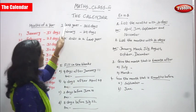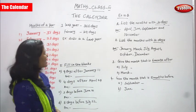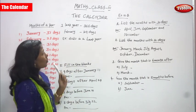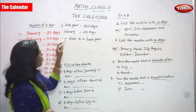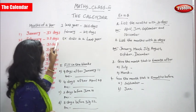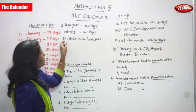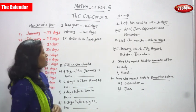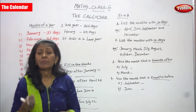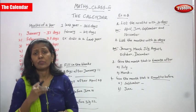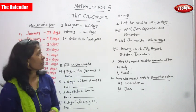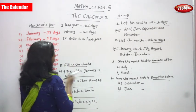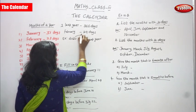A leap year is equal to 366 days. In a leap year, February has 29 days. Generally, one year is equal to 365 days, so February has 28 days. If February has 29 days, we consider that year a leap year. For example, 2020 is a leap year because February has 29 days.